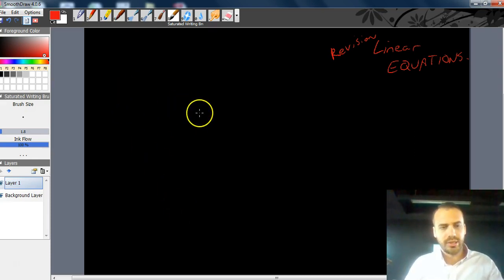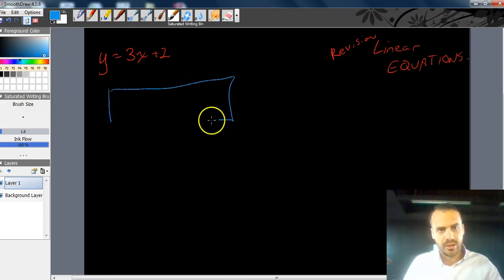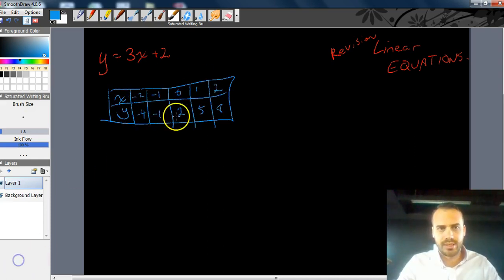Now, first of all, a linear equation can be expressed in three different ways. First of all, you can express it as an equation, y equals 3x plus 2. You could express it as a table, and you guys would have done your fair share of tables, an x and a y there, and then you fill out the table.